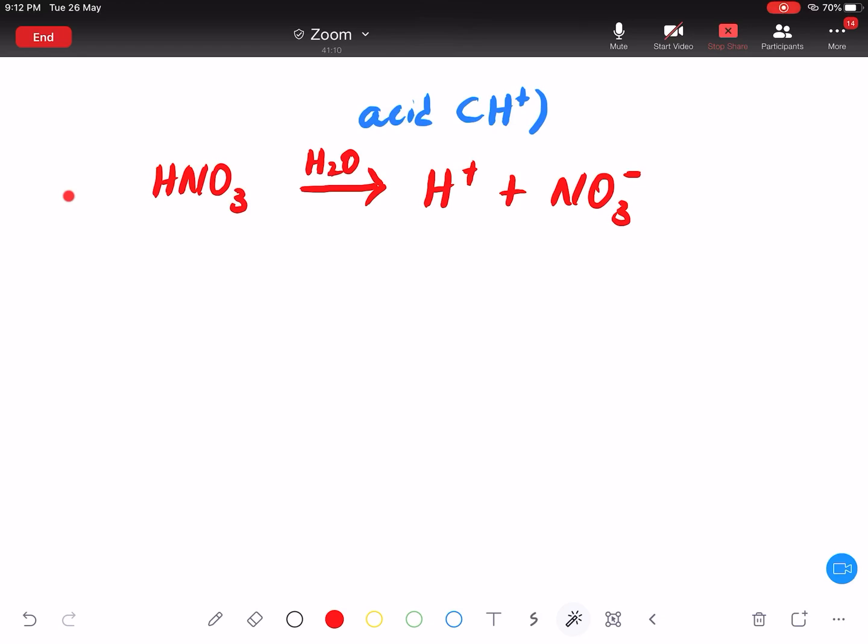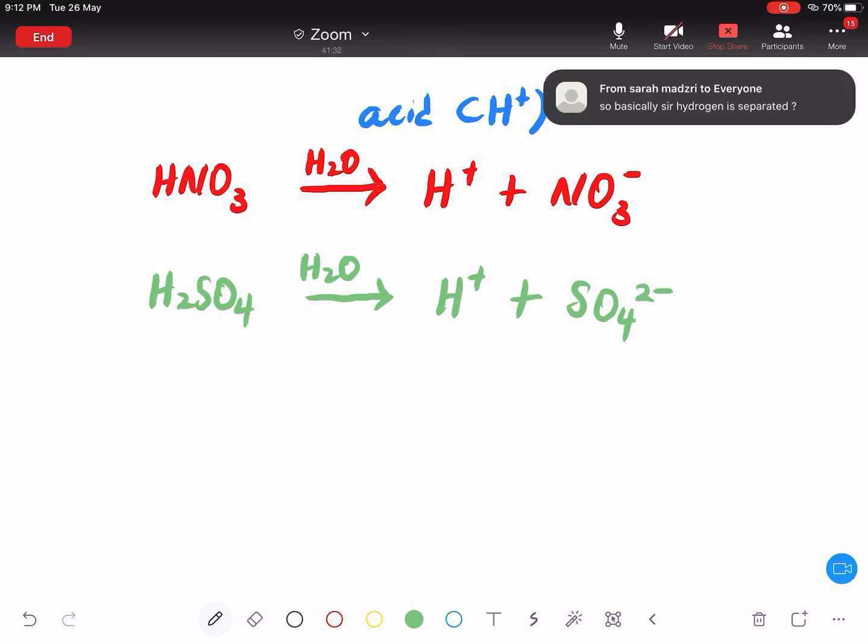Okay. Saya bagi satu lagi contoh, eh. Saya ada H2SO4. Dia larut dalam air. H2O. Dia jadi H plus dan SO4 2 minus. Guys. Guys. Adakah ini seimbang? Yes. Sebab itulah kita cakap, according to Arrhenius, Arrhenius cakap, acid mesti ada ion hydrogen terhasil. Tapi satu je masalah. Ini ada berapa hydrogen? Ini ada berapa hydrogen? Dua. Kat sini ada satu. Dia tak seimbang. Maka saya letak dua.